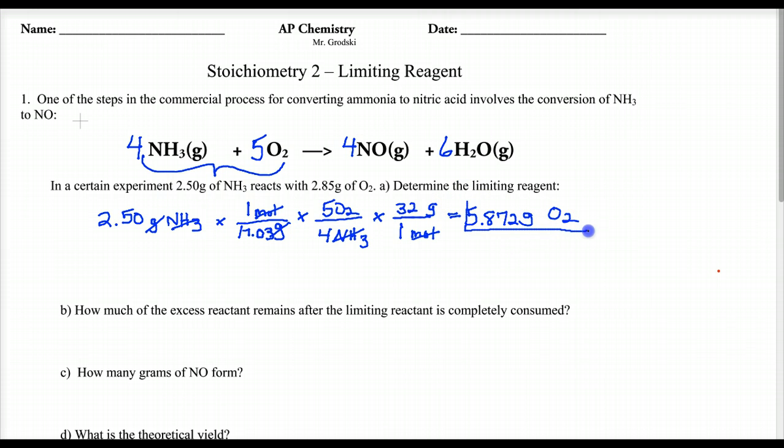Now understand what we just found. We found the grams of O₂ that is necessary to make all of this ammonia react. Now if we evaluate, let's evaluate this here for a second. So my 2.5 grams of ammonia would completely disappear if I have 5.872 grams of O₂.